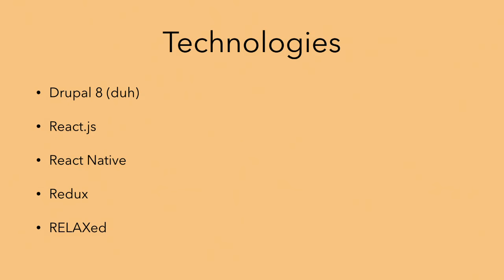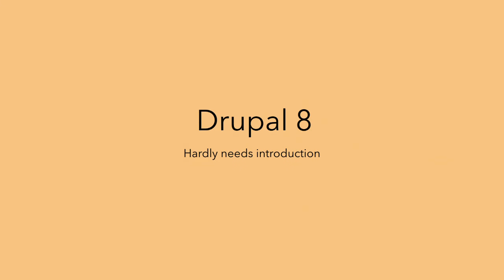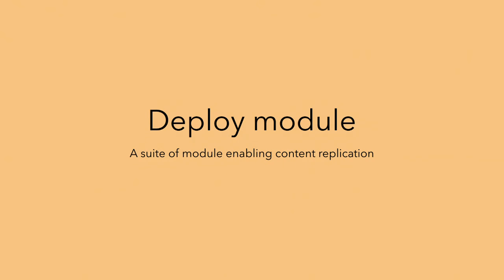So we chose a bunch of technologies — we'll explain them more as we go along. The first technology we obviously used is Drupal 8. But the really core piece of the Drupal stack was the deploy module and its dependencies — we call it the deploy suite. This is a suite of modules that enable you to replicate content between different places. These different places could be two different Drupal sites, or a Drupal site and another compatible application.